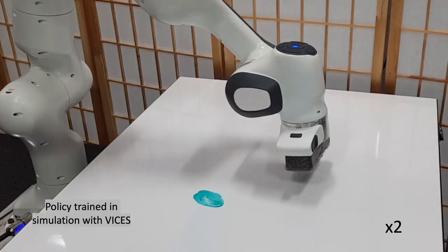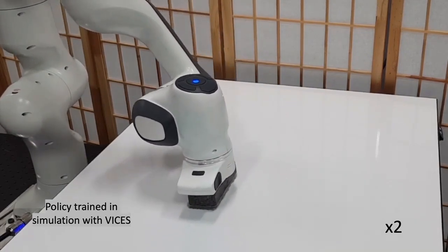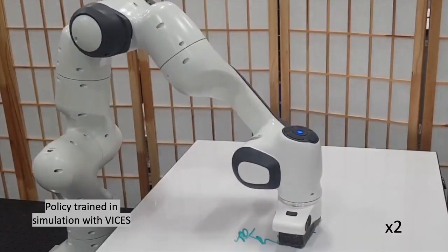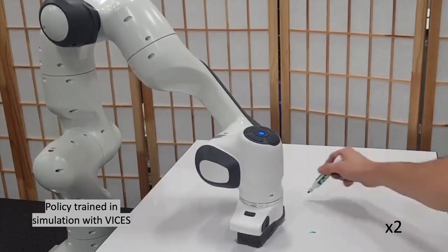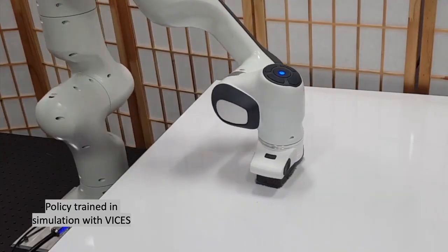We also evaluate the direct transfer of a policy trained in simulation to the real robot with VICES. Without any domain randomization or further training, the real robot successfully wipes the whiteboard.